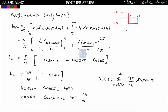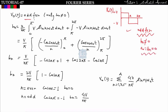Now let us find the Fourier series of this waveform, denoted v_naught(t). Clearly we can see it is periodic with time period 2π and it is also an odd function. Since v_naught(t) is odd, we will get only b_n, while a_naught and a_n equal zero.